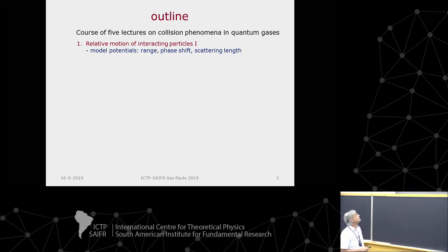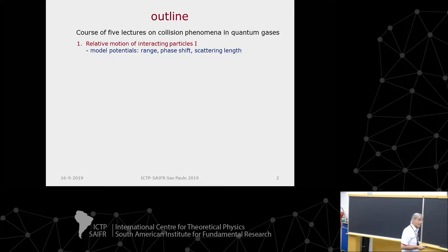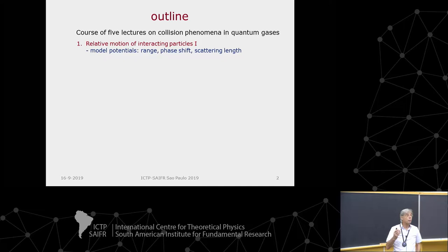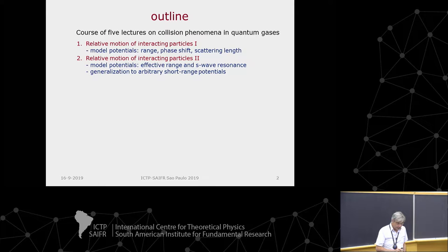In the first lecture, I will talk about the relative motion and introduce characteristic lengths. I use model potentials to illustrate the physics. I will introduce the range of the interaction, phase shift, and scattering length. Tomorrow I will continue with the relative motion, introduce the so-called effective range and the topic of the S-wave resonance.